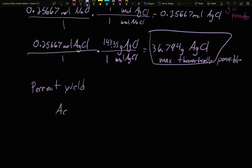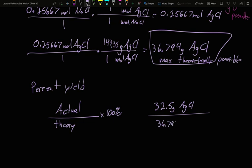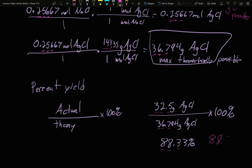The way this works is that you have your actual over your theory times 100%. And that's it. So we would say, what was our actual weight? It was 32.5 grams of silver chloride. I was supposed to get 36.794 grams of silver chloride. And so I can solve what percentage of the maximum I got. In our case, 88.33%. At this point we can look at sig figs. We had said it was three for our moles, so it was still three. Our molecular masses were always more than three, so really it was just three carried through. Still three carried through. When we're all done, we'll keep three. So this will round to 88.3%.